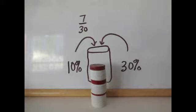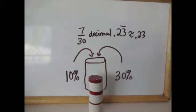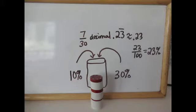7 divided by 30, and I'm going to do this on a calculator. And I get 0.233333333, which is approximately 0.23. And I can turn this into a percent by even just reading that decimal. This is 23 hundredths, so 23 out of 100, or 23 percent.